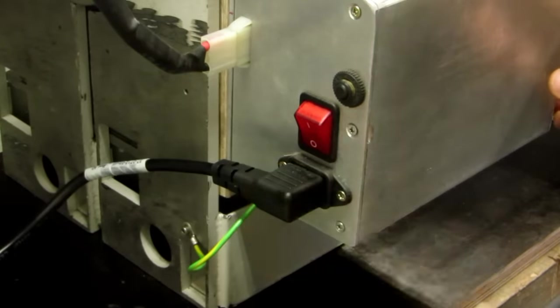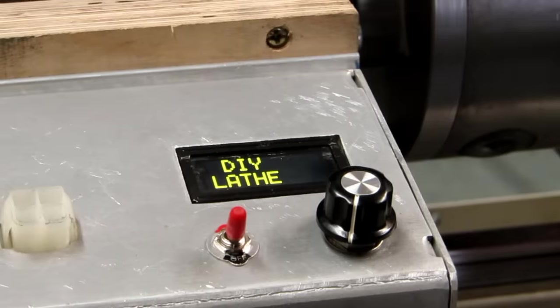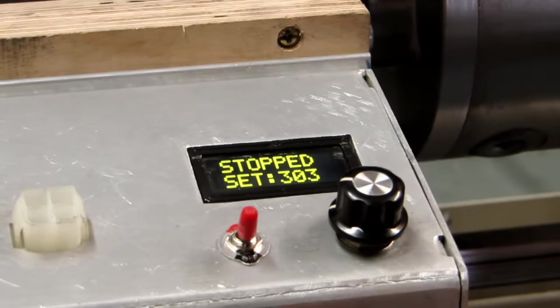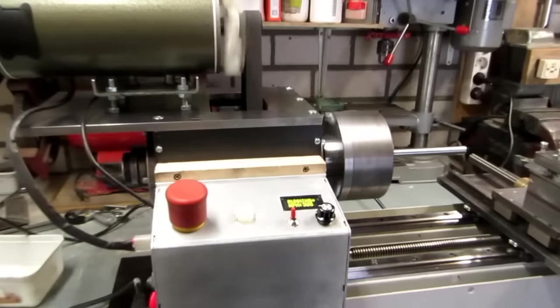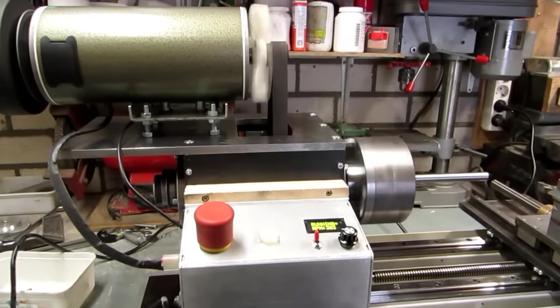After plugging in the mains, we can switch on the unit for a test run. In stopped mode, we can dial in the desired RPM, and after flipping the switch, the motor speed will increase to match the set value.